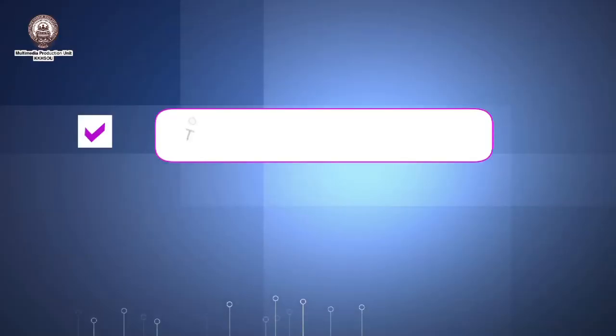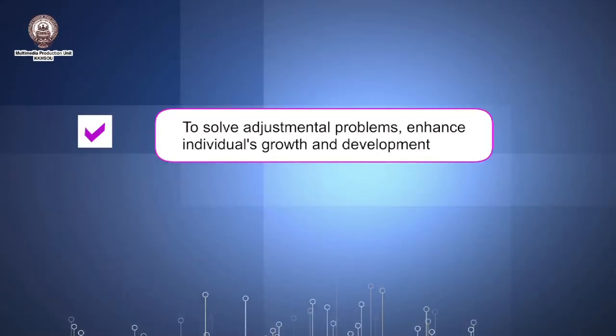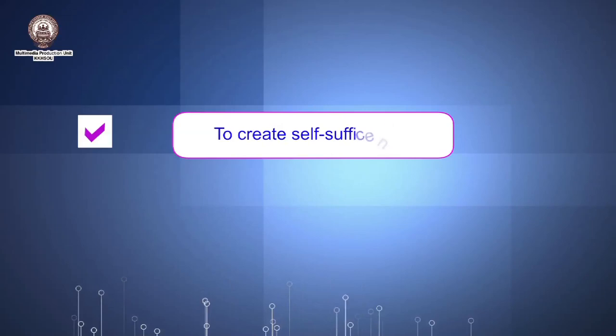To solve adjustmental problems and enhance individual's growth and development. Adjustmental problems indicates not only the societal environment but also the individual's internal conflict that a person is facing. Only by solving these adjustmental problems can a person have proper growth and development in the mind as well as in the body. Fourthly, to create self-sufficiency — a social worker links a person with available resources and makes him or her independent or self-dependent.